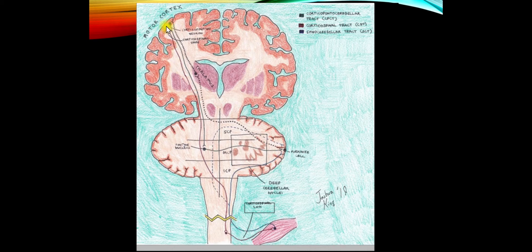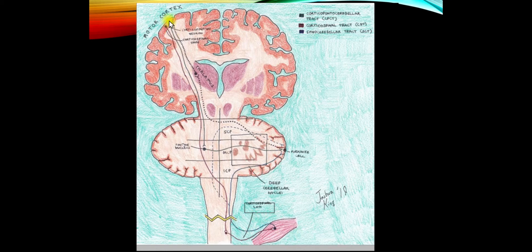Remember up here, we have these two pathways that travel down in parallel: the corticospinal tract and the cortical pontocerebellar tract. Let's first follow the corticospinal tract down. It goes through the posterior limb of the internal capsule, through the cerebral peduncle, through the basis pontis, crosses over at the pyramidal decussation to supply anterior horn cells on the opposite side of the spinal cord to move your opposite arm and leg. That is the intended movement.